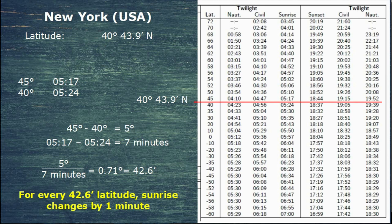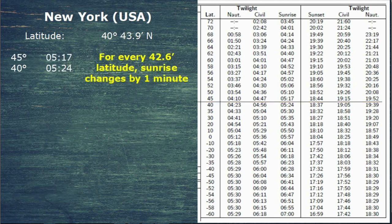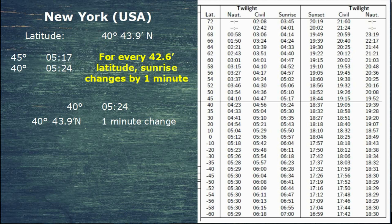Working out the exact time of sunrise at our particular latitude: our latitude is 40° 43.9', which is near 40 degrees. Given that difference of 43.9 minutes, we can see it's going to be a 1-minute change in sunrise time. Since the sun rises earlier at 45 degrees than at 40 degrees, and we're moving in that direction, it will be 1 minute earlier than at 40 degrees. So at 40° 43.9' the sun rises at 5:23.